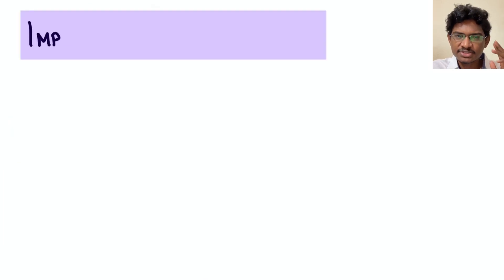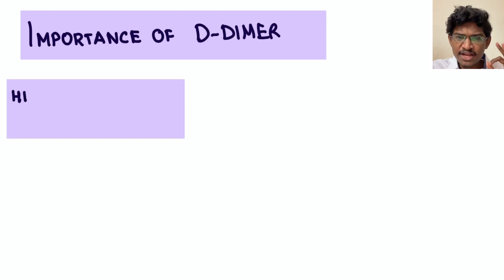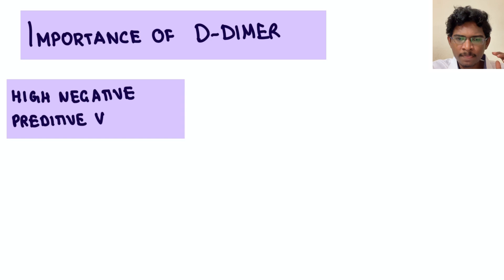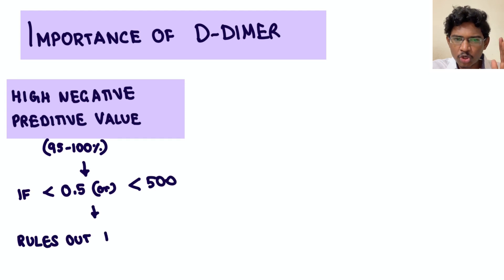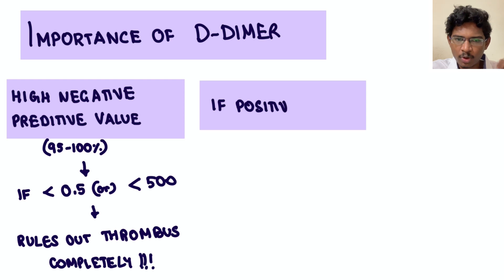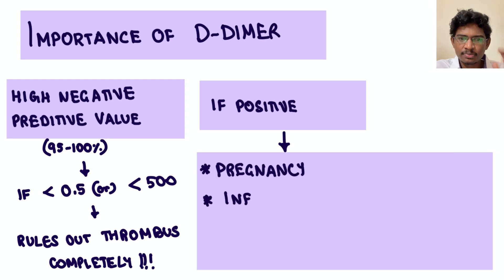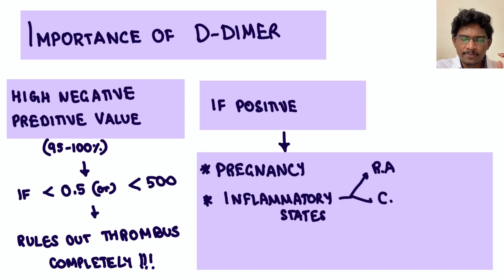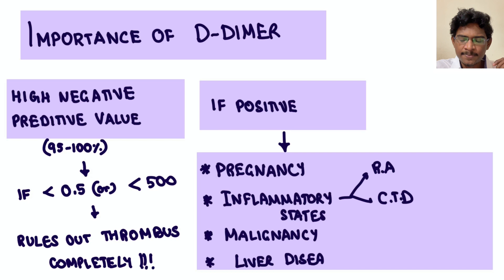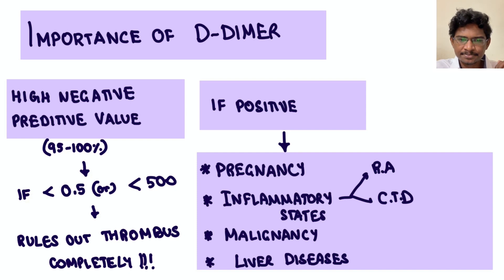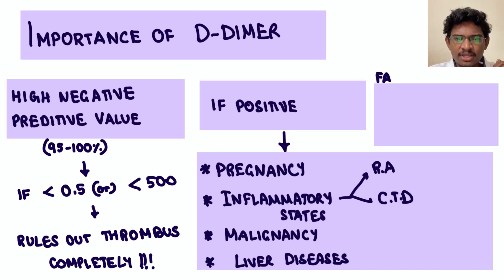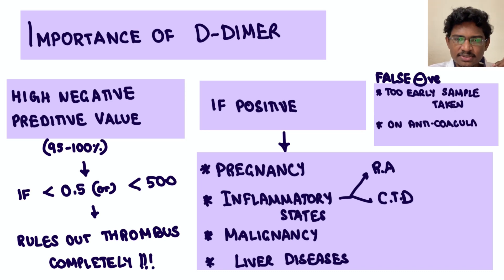D-dimer has high negative predictive value — if D-dimer is less than 500 or 0.5, we can be sure there is no thrombus inside the body. If it becomes positive, it is not always due to COVID; there are multiple reasons including pregnancy, inflammatory states like rheumatoid arthritis, connective tissue disorders, and malignancies. It may also be falsely negative — if the sample is taken too early on day one, or if the patient is already on anticoagulants.